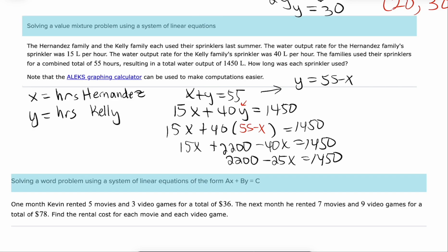If we combine 15x with negative 40x we get negative 25x. And then if we subtract 2200 from both sides we get negative 750. And so if we divide both sides by negative 25 we get 30 hours. Now one good way when it comes to problems like this, if it's hours, if it's how many hamburgers you sold, you should get a positive number. If you don't, you know something's gone wrong. Now remember we know that y is 55 minus x. So y is going to be 55 minus 30 or 25.